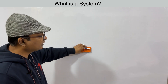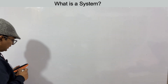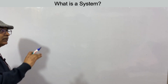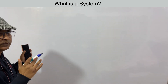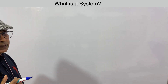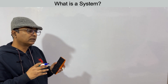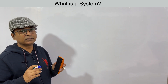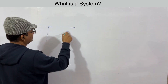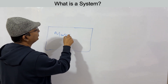Now let's look at the interconnection of systems. We don't have standalone systems — several systems are interconnected to form a larger system that performs real-time work. For example, consider a music system, which contains many interconnected systems inside it.